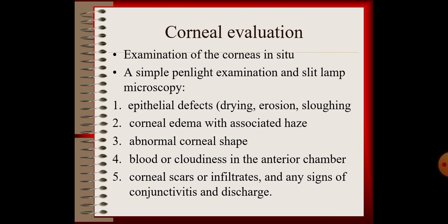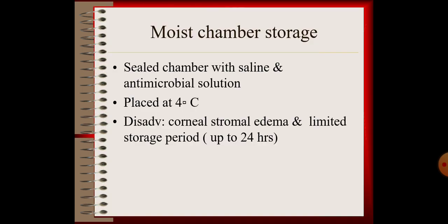Next, storage methods. After retrieving the cornea, how it has to be stored. First is moist chamber storage: a sealed chamber with saline and antimicrobial solution, placed at 4 degrees Celsius. Here it can be kept for up to 24 hours only. If kept for longer, corneal stromal edema will develop, so this is a limited storage period method.